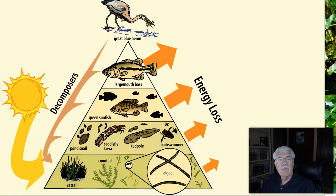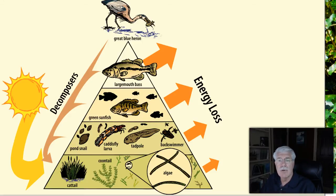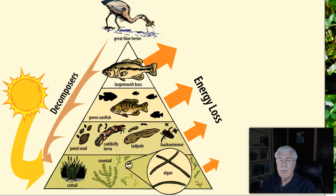Most of the food energy in a food chain is lost moving up each trophic level. For example, it takes about 3,200 pounds of microscopic plants to produce about 400 pounds of microscopic animals. These 400 pounds of microscopic animals can feed about 60 pounds of crayfish, snails, mussels, clams, and aquatic insects. Those animals may in turn be eaten by about 8 to 10 pounds of bluegill. Eating 8 to 10 pounds of bluegill will allow a largemouth bass to grow by only about one pound.